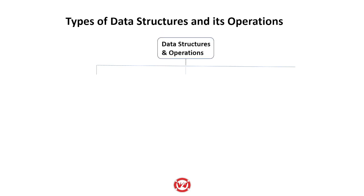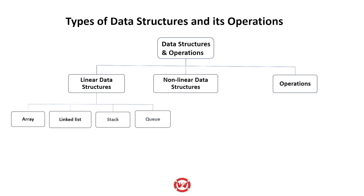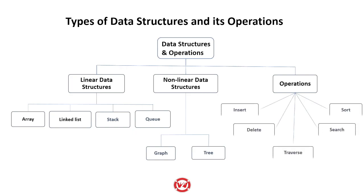The types of data structures and operations we study in this subject are the higher-end data structures: linear and non-linear. On linear data structures, we have arrays, linked lists, stacks, and queues. For non-linear data structures, we have graphs and trees. The operations we perform on each of these data structures are insert, delete, traverse, search, and sort.